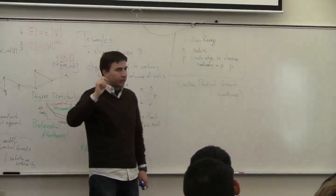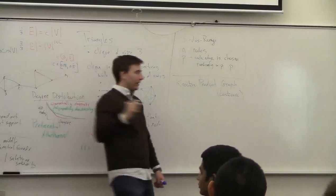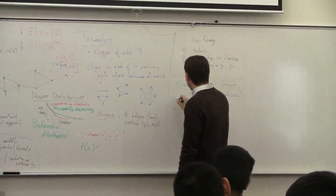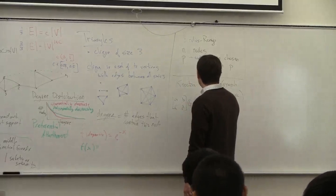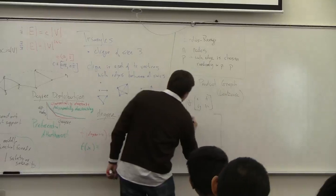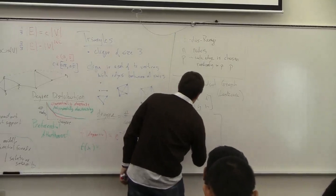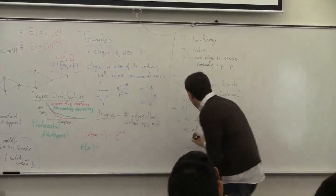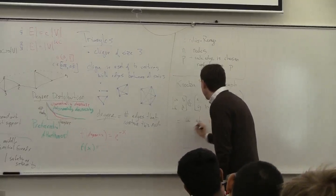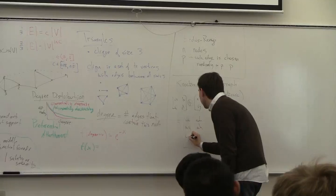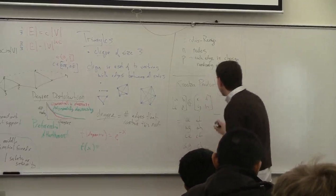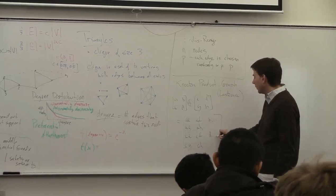A Kronecker product of two matrices — say [a, b; c, d] and [e, f; g, h] — produces a larger matrix where each entry of the first matrix multiplies the entire second matrix: [ae, af, ag, ah; ce, cf, cg, ch; ...] and so on starting with each element.